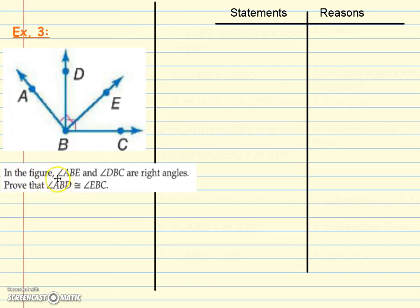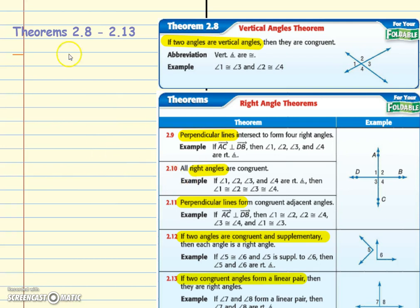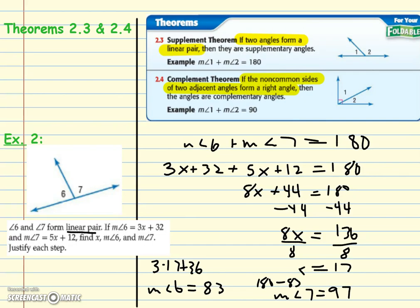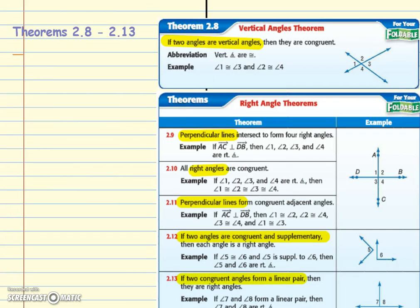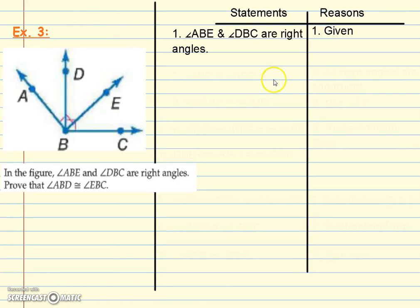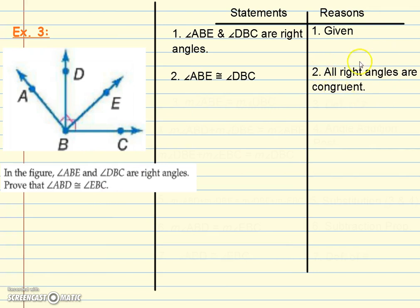We have to do a proof. In the figure, angles ABE and DBC are right angles. We're given right angles, so look through your theorem book for theorems about right angles. Postulate 2.10 says all right angles are congruent. I also know that if two common sides of adjacent angles form a right angle, the angles are complementary. I'm going to use 'all right angles are congruent.' This one doesn't have a short name, so write the whole thing out. Since the angles are congruent, the measures are equal — Definition of Congruent — so the measure of ABE equals the measure of DBC.